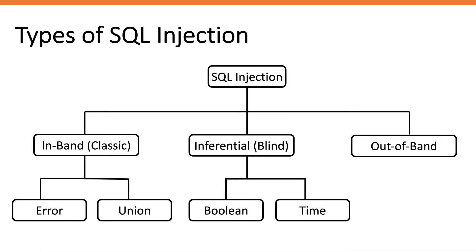Now we'll go at a more granular level and talk about the different types of SQL injection. SQL injection vulnerabilities can be classified into three major categories: the first is in-band or classic SQL injection, the second is inferential or blind SQL injection, and the third is out-of-band SQL injection. In-band or classic SQL injection is when the attacker uses the same communication channel to both launch the attack and gather the results.